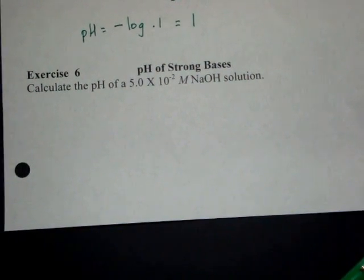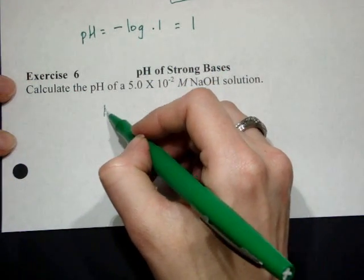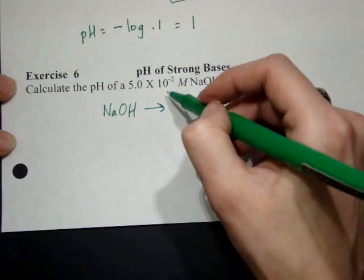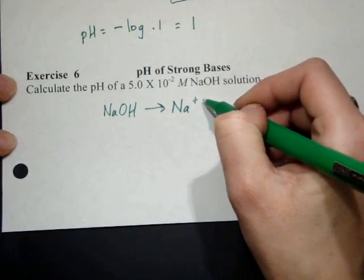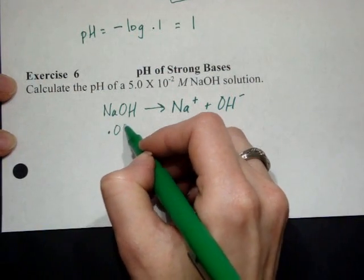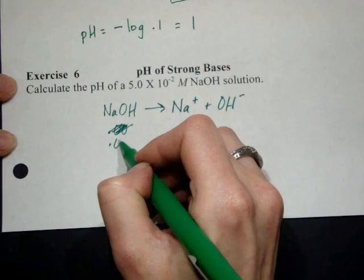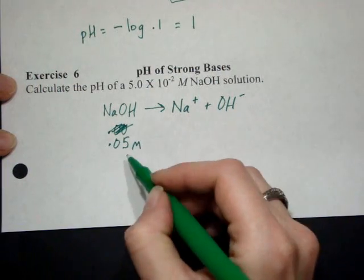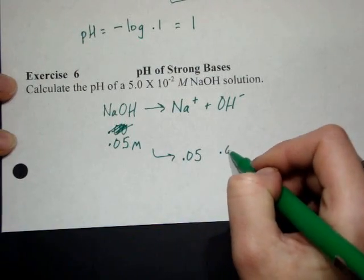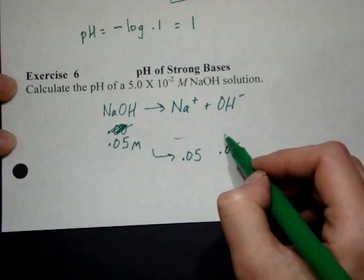Strong bases will be awfully similar except instead of forming an acid now. When it dissociates, this forms a base, forms hydroxide. So if I have 0.05 molar NaOH, as this dissociates, it's going to make 0.5 molar of each. And then we'll have nothing left over here.